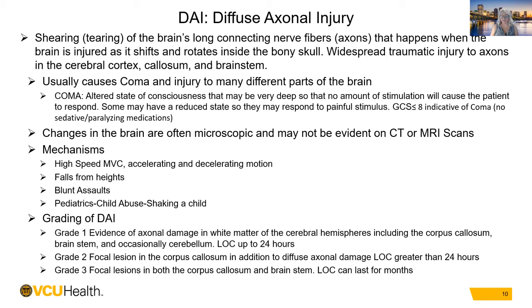Grade 2 DAI involves a focal lesion in the corpus callosum in addition to diffuse axonal damage; LOC is usually greater than 24 hours. Grade 3 DAI involves focal lesions in both the corpus callosum and brainstem; loss of consciousness can last for months — this is what you're typically looking at when someone has been in a coma for three months.